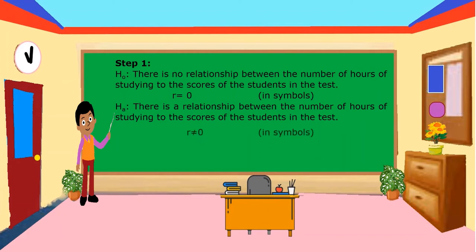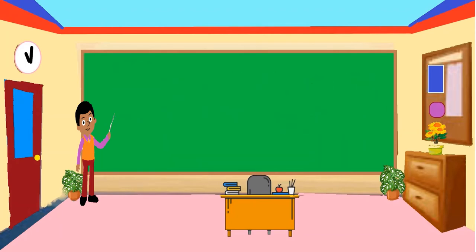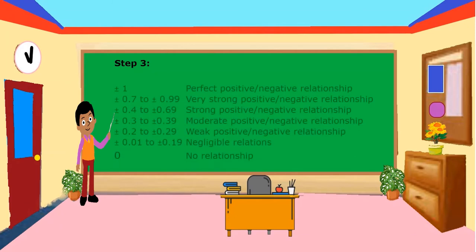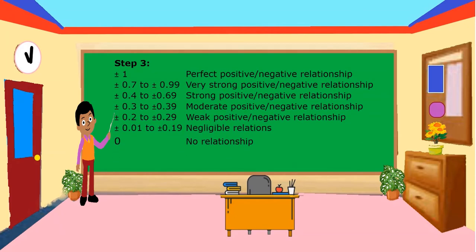Step 2: we directly go to the test statistic because here we don't use level of significance. The test statistic is the Pearson correlation R. Step 3 is not about the rejection region but about the description of R.